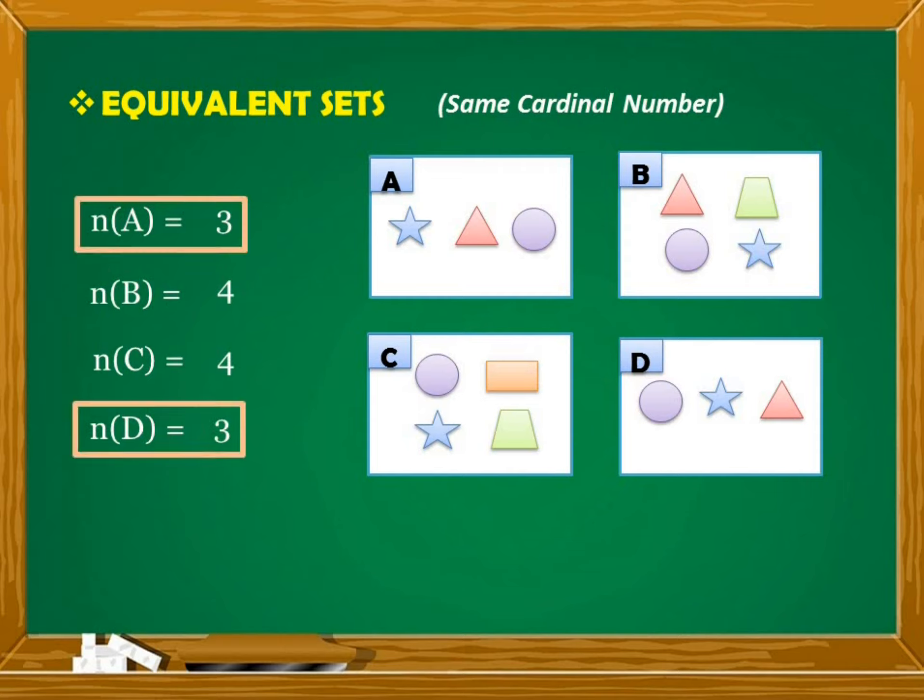We can see that the cardinal numbers of set A and D are equal, so we can say that A is equivalent to set D. And since the cardinal numbers o yung bilang ng elements ng set B at C ay pareho, we can say that set B is equivalent to set C. Again, just remember that if the number of elements in two sets are equal, they are called equivalent sets.